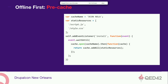Cache strategies implemented: offline first and network first. For slow connections, offline first kicks in. There's also an offline redirect page. We'll quickly go through the demo now, though we don't have much time left.